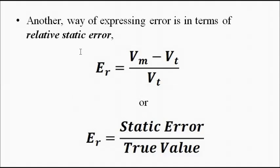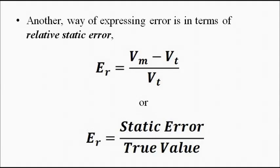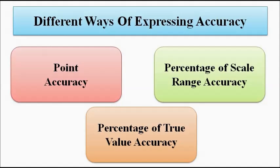There is another way of expressing accuracy, which is the relative static error. Relative static error is defined as the ratio between the static error and the true value — that is, the static error (Vm minus Vt) divided by the true value Vt.